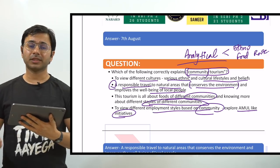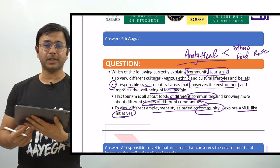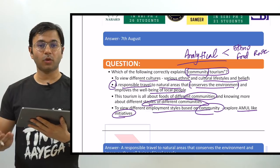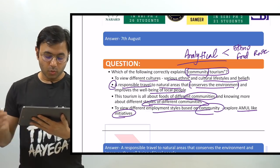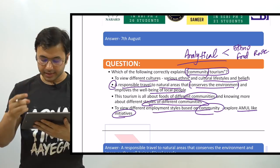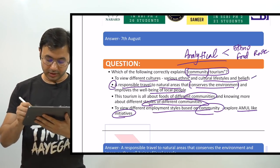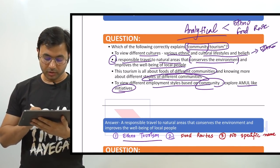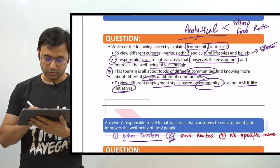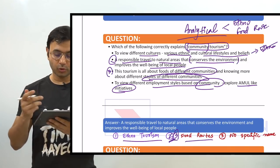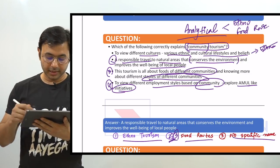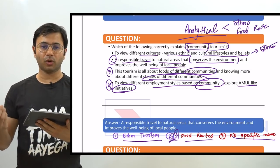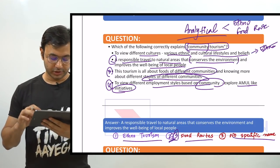The answer is B — responsible travel to natural areas that conserves the environment and improves well-being of local people. Community tourism is about travelling to natural areas where traditional communities have lived for a long time, understanding how they carry out day-to-day activities, and how they contribute to conserving the environment. Option A describes ethno-tourism, option C describes food routes or food tourism, and option D is a fabricated option — there is no such tourism focused on Amul-like community initiatives.